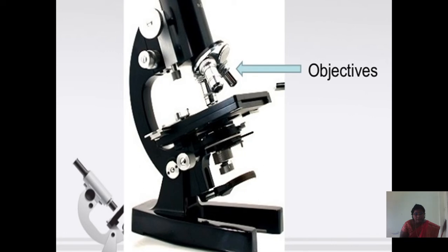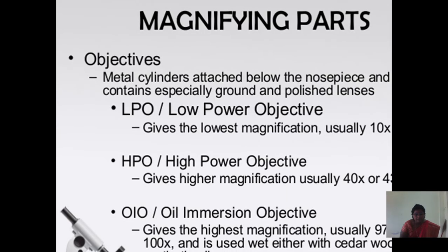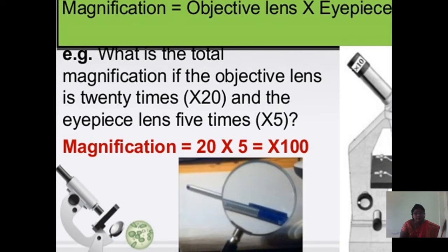Magnifying parts include the objectives, which are metal cylinders attached below the nosepiece containing specially ground and polished lenses. The low power objective gives lower magnification, usually 10 to 30x. The high power objective gives higher magnification of 40 to 41x. The oil immersion objective gives the highest magnification, usually 97 to 100x, and is used wet with either cedar oil or immersion oil. The total magnification is calculated as objective lens multiplied by the eyepiece. For example, if the objective lens is 20x and eyepiece is 5x, the total magnification is 20 × 5 × 100.